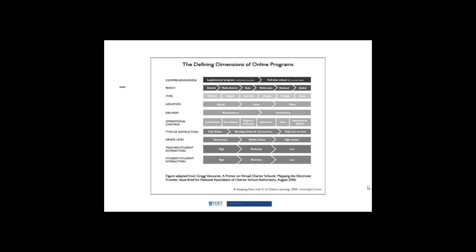Let's take a look at what counts as an online program. This figure — the citation's at the bottom — is again out of the United States. When you're looking at research around K-12 online learning, you need to make sure you check your terminology, because while there are many similarities, there are some differences depending on where the research is coming from — international, Canada, or the United States. This was an attempt, done in 2009, to define the different pieces in an online program, and it's still used today to describe different dimensions in an online program.